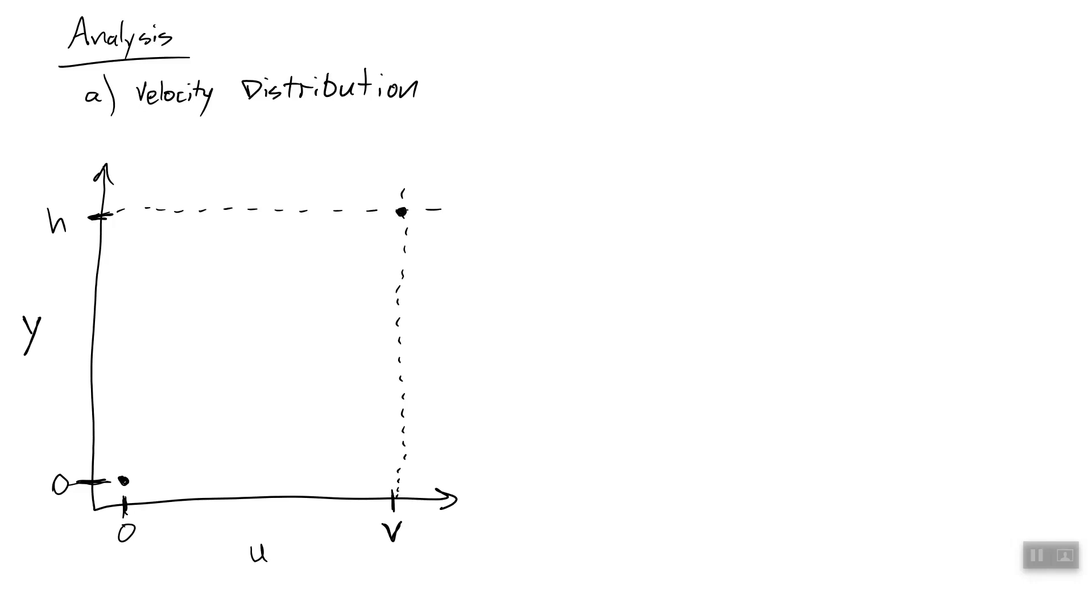So that fluid is moving with a velocity of v. We also know we have a linear profile, which means there is a straight line of change in velocity between those two points. All right, so we can now draw what our velocity profile looks like.